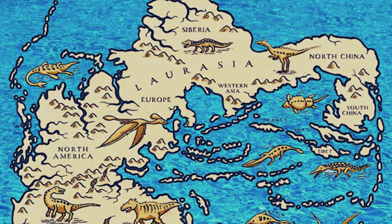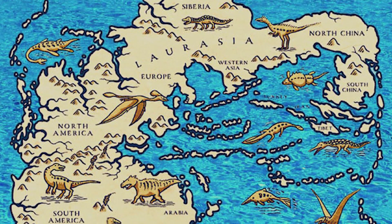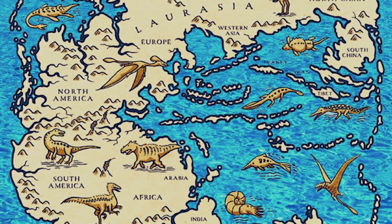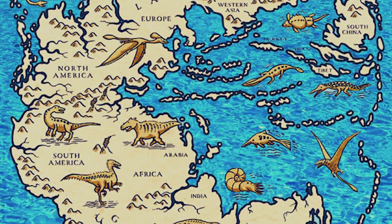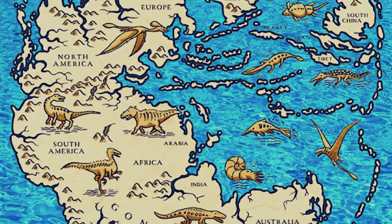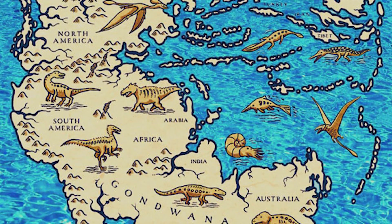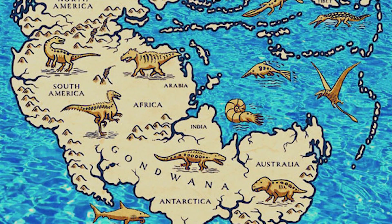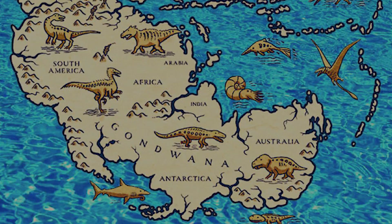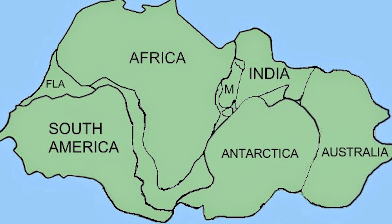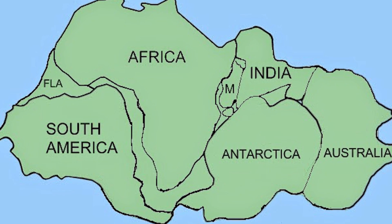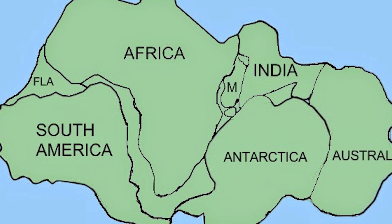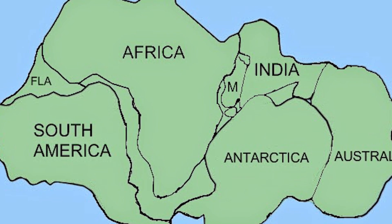At the time, the landmasses and continents were very different from today. Eurasia and North America formed a northern supercontinent called Laurasia. Animals could move freely across this enormous landmass, which was separated from the other large landmass called Gondwana. This was more southerly and consisted of the modern-day continents of South America, Africa, Antarctica, and Australia.